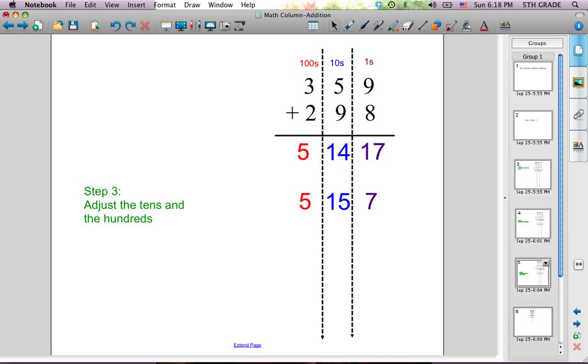To fix the fact that we now have 2 digits in the tens column, we need to adjust the tens and the hundreds. We get to keep the 7 the same in the ones column. We get to keep the 5 in the tens column, but we need to carry over the 1 into the hundreds column.